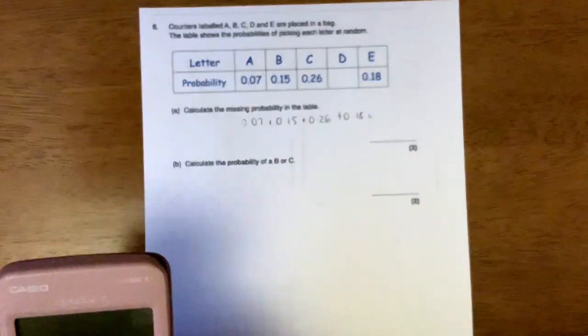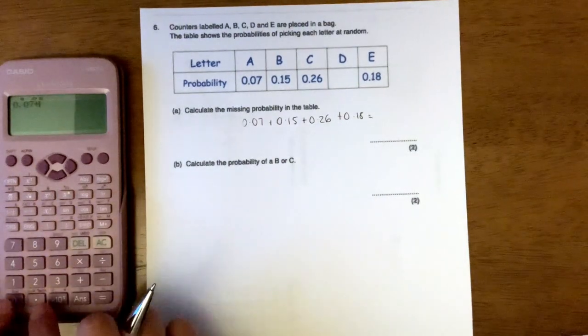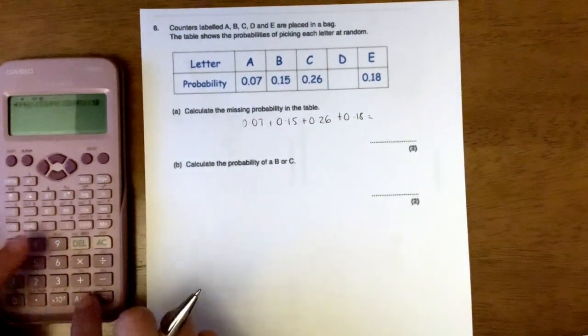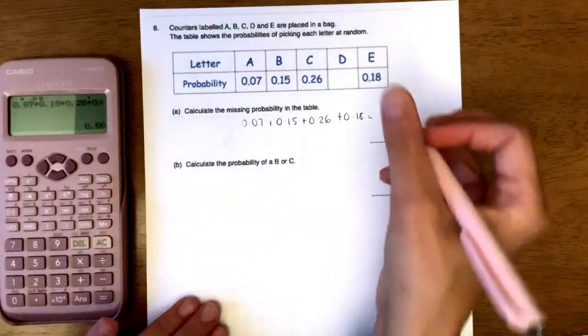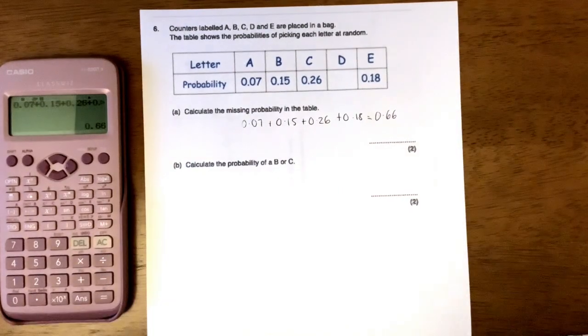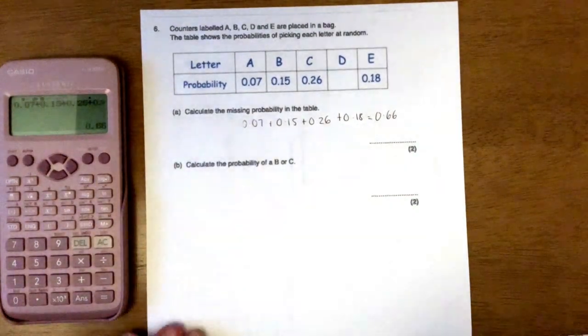So 0.07, 0.15, 0.26, 0.18 and it gives us a total of 0.66.